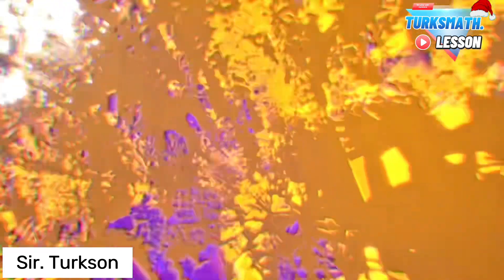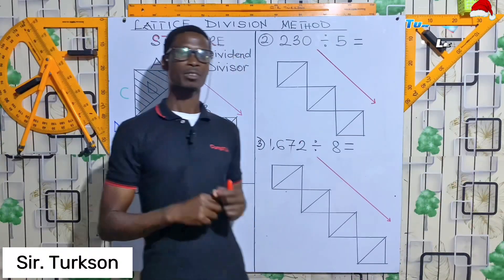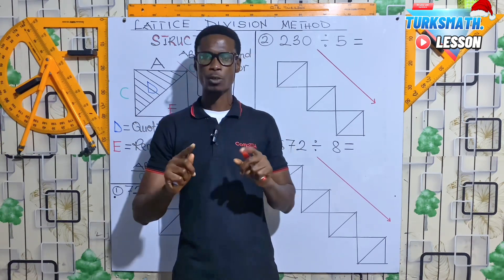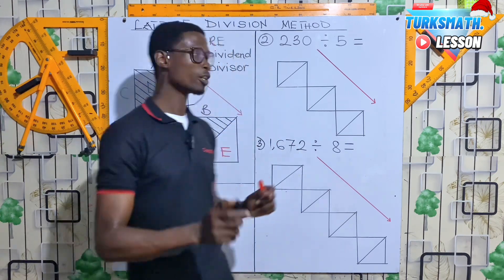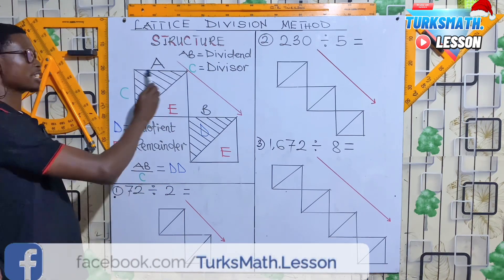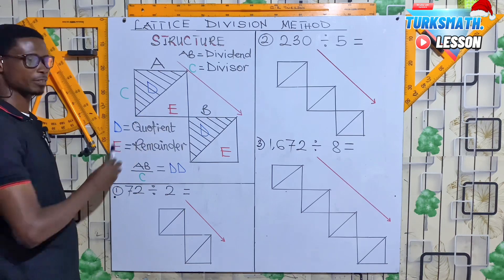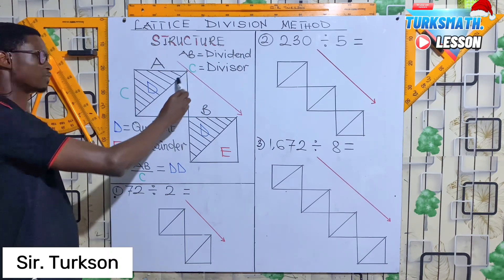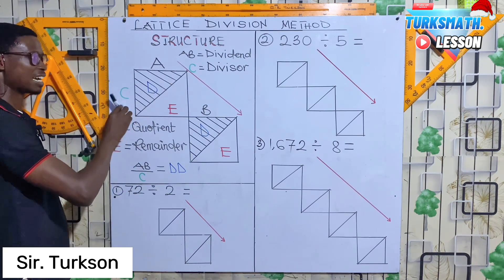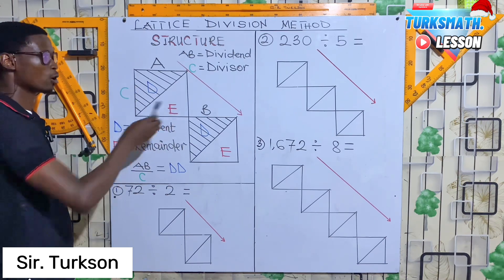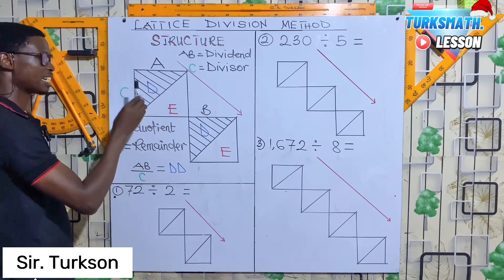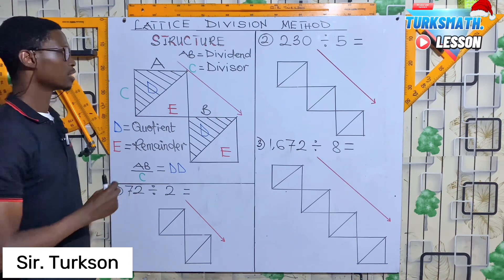Lattice division method — lattice simply means a box with a diagonal line. Let me walk you through the structure of the lattice division method. This is a box with a diagonal line. The diagonal line divides the box into two parts: the upper part, which is the shaded area, and the unshaded area which is the lower part. I've labeled the parts A, B, C, D, and E.